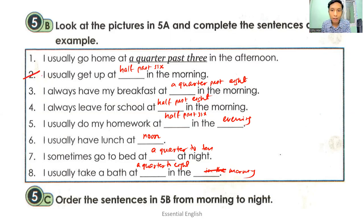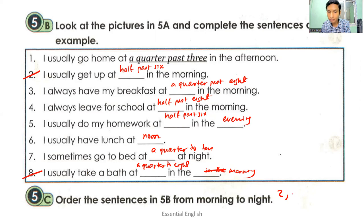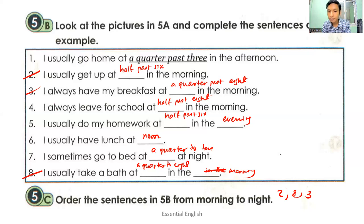The first sentence should be number two: I usually get up at half past six in the morning. After getting up, you take a bath: I usually take a bath at a quarter to eight in the morning. Then you have breakfast — I always have my breakfast at a quarter past eight. Then number four: I always leave for school at half past eight in the morning.